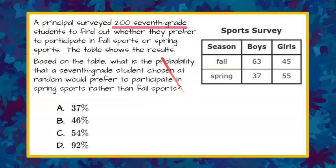First, we're going to identify that we have 200 7th graders. If we add up all four of these values it would equal 200, because that is the number of people that were surveyed. Boys and girls were surveyed and they were asked what was their favorite season to play sports. These are the boys that said fall, the girls that said fall, the boys that said spring, and the girls that said spring. So that's our table.